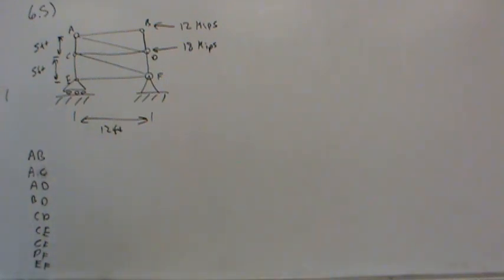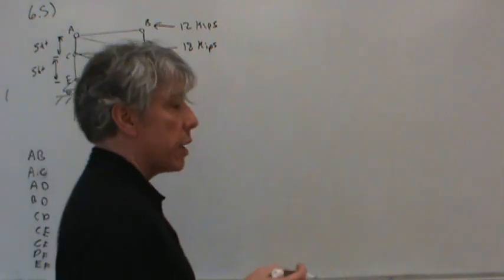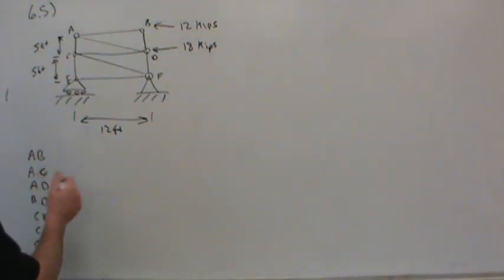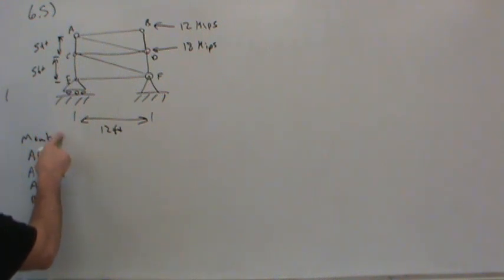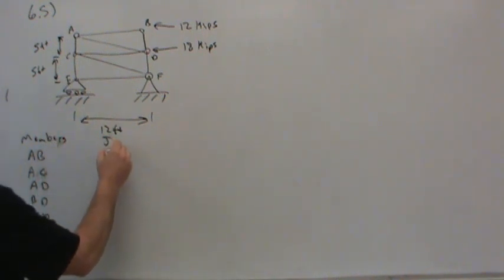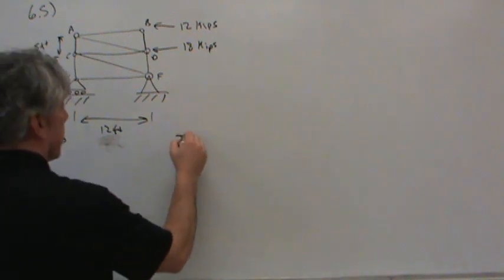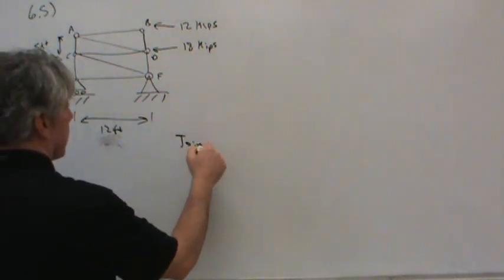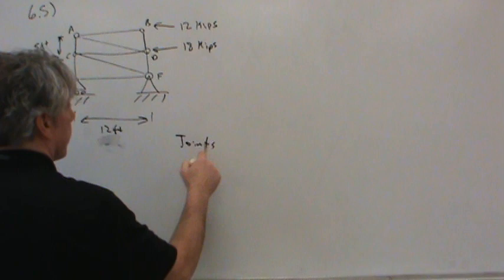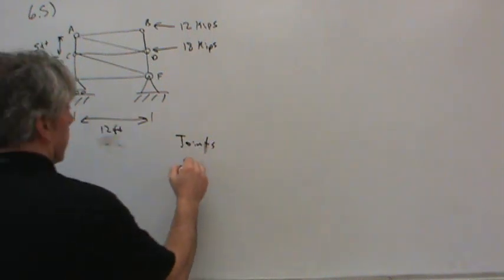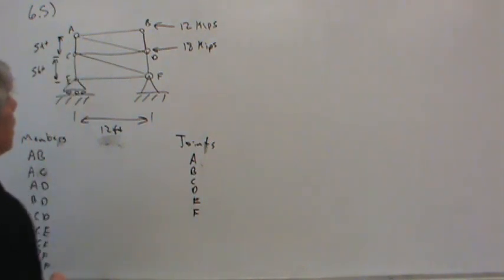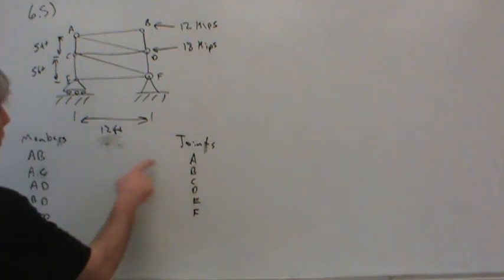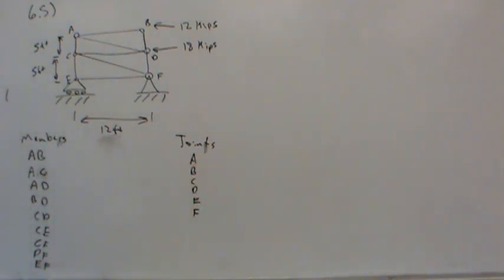The method is to consider each joint independently. We have joints A, B, C, D, E, and F — six different free body diagrams we're going to take, six different joints.